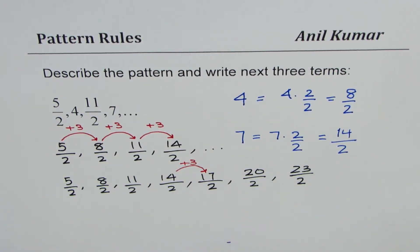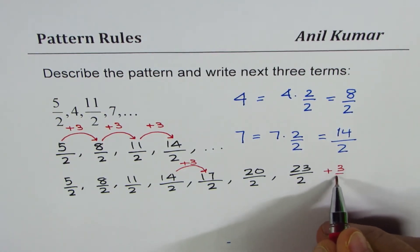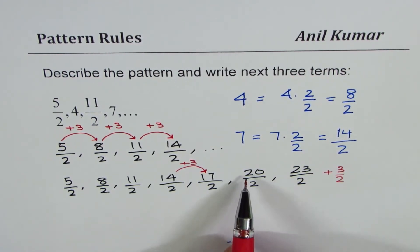What have we done here? As you can see, we are actually adding 3 over 2. Same denominator, so numerator gets added with 3. Now here 20 over 2 can be written as 10.